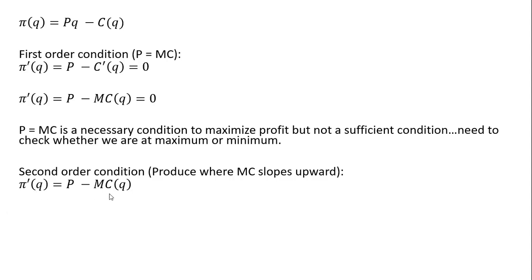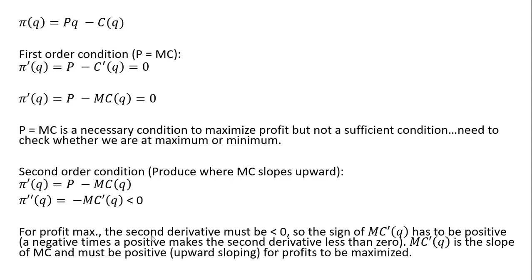From our first order condition we have this derivative of the profit function. The second order condition requires us to take a derivative of a derivative — a second derivative. Taking that derivative, we get this result. P cancels, as it's just a constant, and the derivative of marginal cost is given by this notation, with the minus sign out in front. In order to be at a maximum, this second derivative must be less than zero. So for profit maximization, the second derivative must be less than zero, meaning the derivative of marginal cost must be positive.